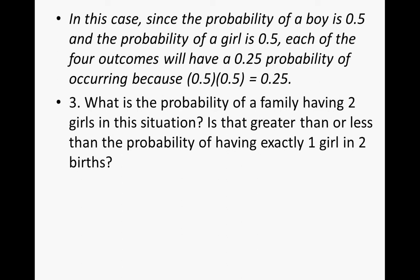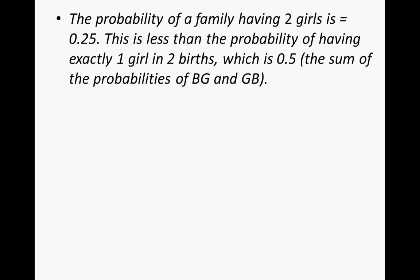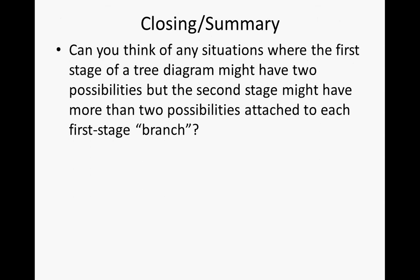For part three: what is the probability of a family having two girls? Is that greater than or less than the probability of having exactly one girl in two births? The probability of two girls is 0.25, or 25%. This is less than the probability of having exactly one girl in two births, which is 0.5 — the sum of the probabilities of BG and GB: 0.25 plus 0.25 equals 0.50, or 50%. Can you think of situations where the first stage of a tree diagram has two possibilities but the second stage has more than two? We'll cover that in our following lessons. See you in class!